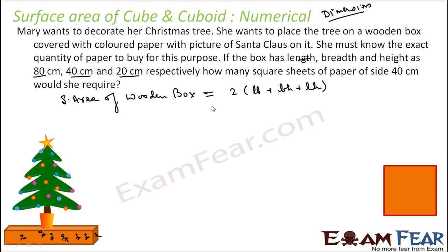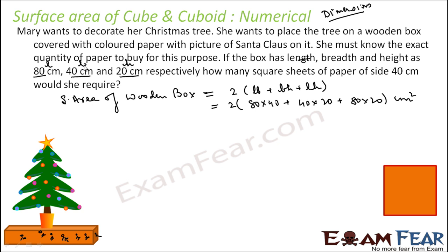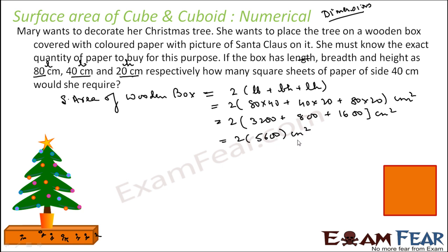The surface area of the wooden box is 2(LB + BH + LH). Luckily the dimensions are all in the same units, so nothing to worry. Putting the values: 2 × (40 × 20 + 40 × 20 + 80 × 20). This gives 2 × (800 + 800 + 1600) = 2 × 3200... working through the arithmetic, it comes out to 11,200 cm².